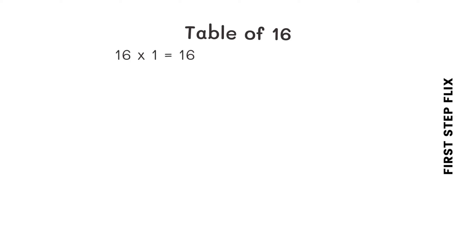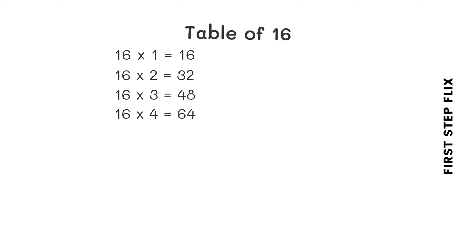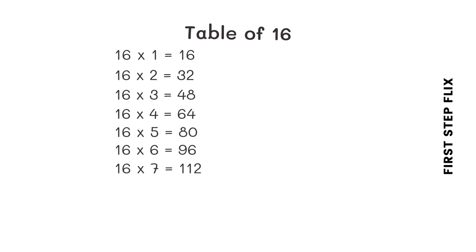16 ones are 16. 16 twos are 32. 16 threes are 48. 16 fours are 64. 16 fives are 80. 16 sixes are 96. 16 sevens are 112.